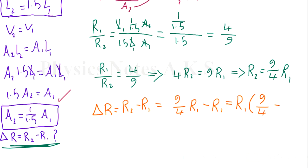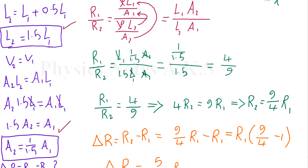You can use a calculator, so the change, delta R, is going to be 5 over 4 R1. Of course, so the answer will be option C.